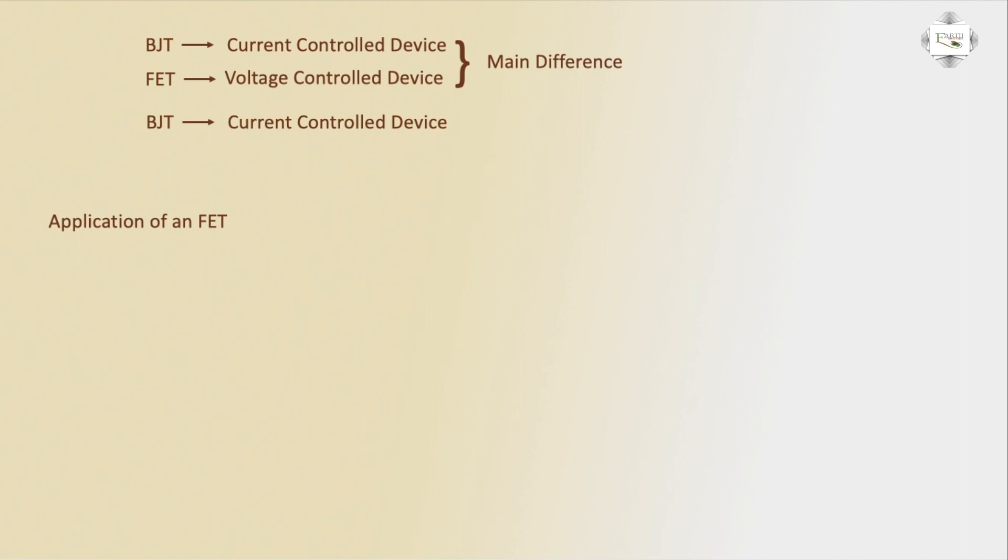FET field effect transistor can be used as a switch or an amplifier. BJT is a bipolar junction device. FET field effect transistor is a unipolar device using free electrons.